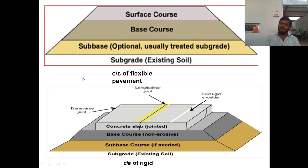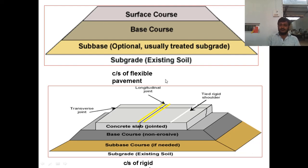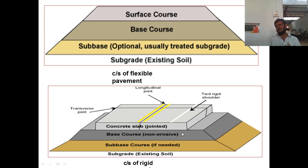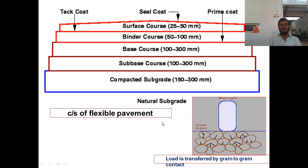A typical cross-section of flexible pavement includes: existing or natural subgrade, a compacted subgrade, sub-base course, base course, and surface course. For rigid pavement: existing soil subgrade, sub-base course (only if needed), base course — usually dry lean concrete (DLC) — and then the concrete slab as the surface course.